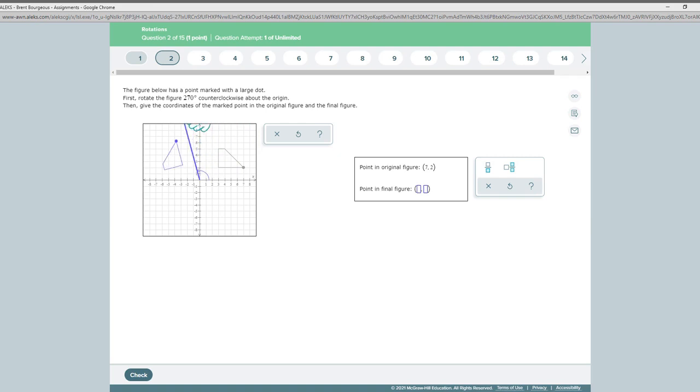And it says that we're going counterclockwise, so that's the right direction. 180 and then 270. So now we're going to see if we did it correctly by looking at this point and then typing in the coordinates of that dot right there, which in this case is 2 and negative 7.